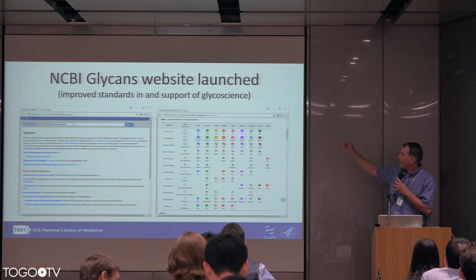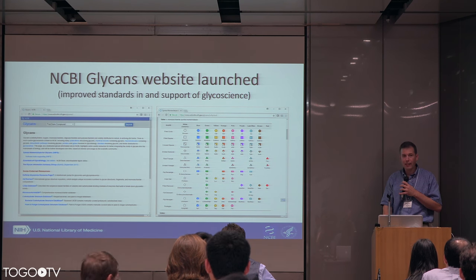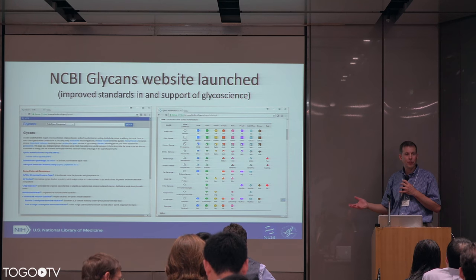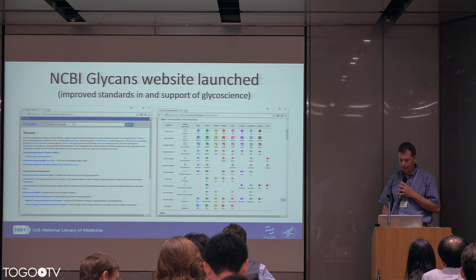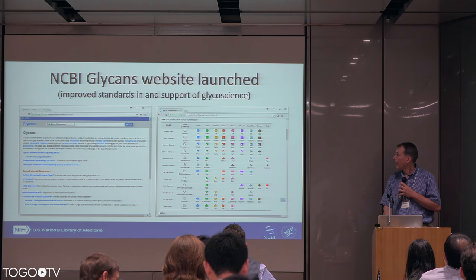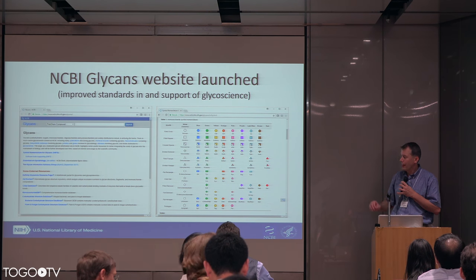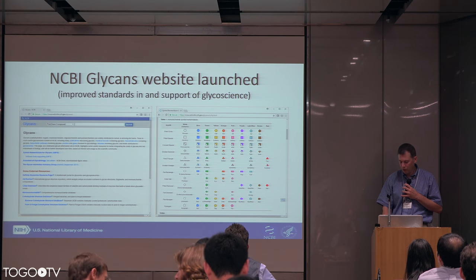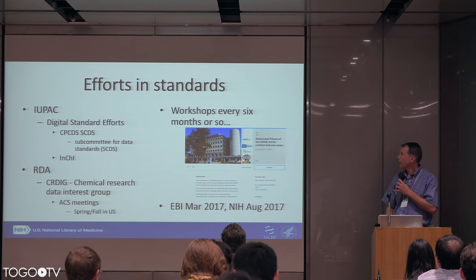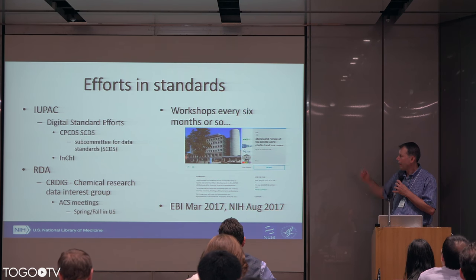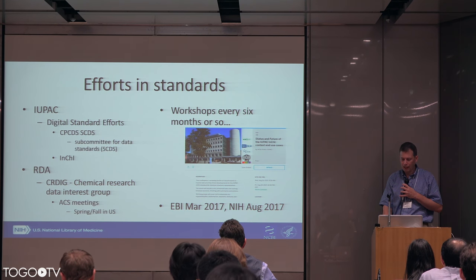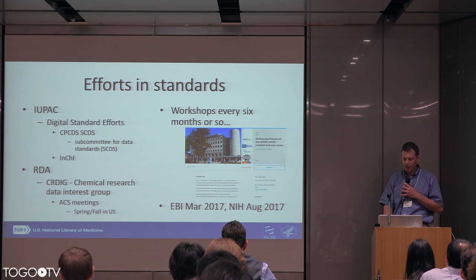We recently launched — just a few days ago — the NCBI glycans website. Some of this came out of Biohackathon-based efforts. We have symbolic nomenclature associated with Ajit Varki's glycobiology book. The idea is a recognition that glycans and glycoscience are of importance, and we're trying to do more in terms of how we can better integrate that effort. We've also been involved in a number of standards efforts, both within IUPAC and others. We had a three-day workshop at NIH in August from the 16th through the 18th, and another one previously at EBI earlier this year in March.